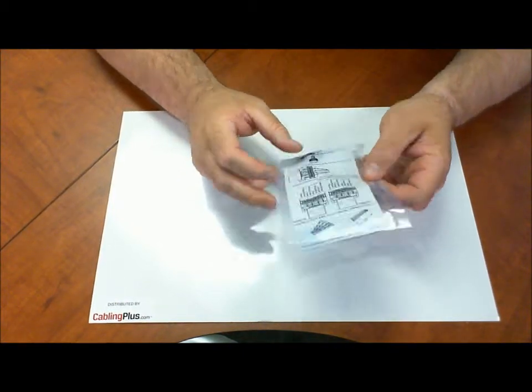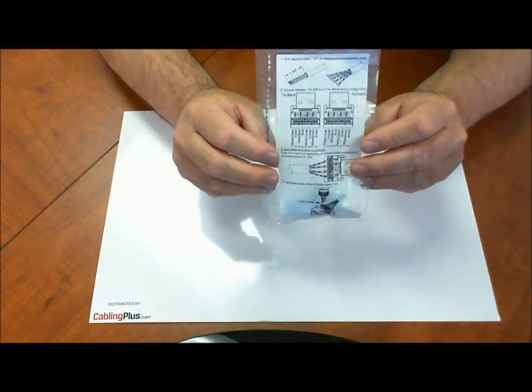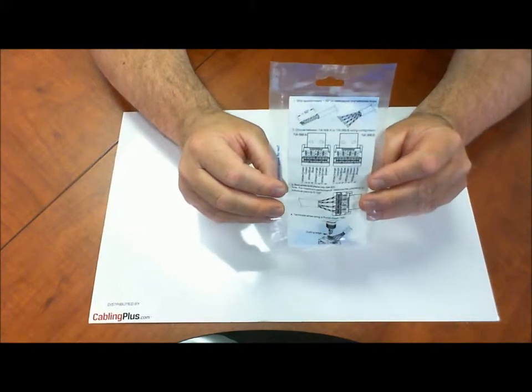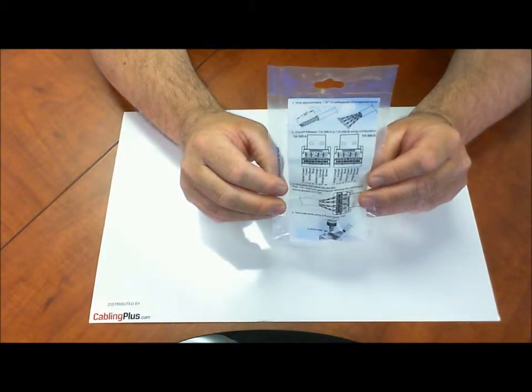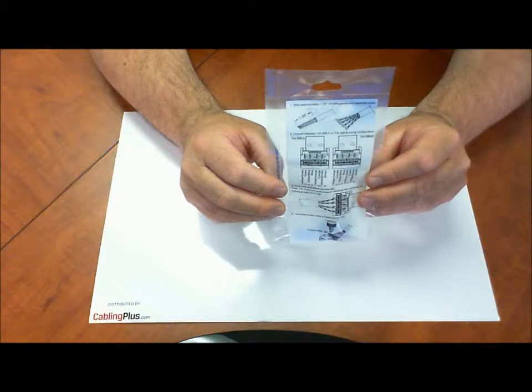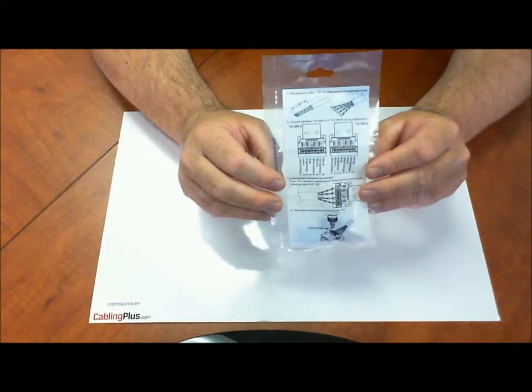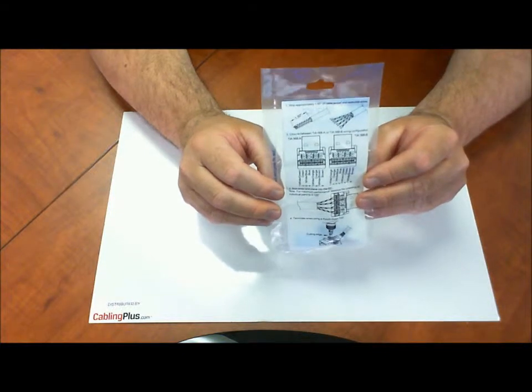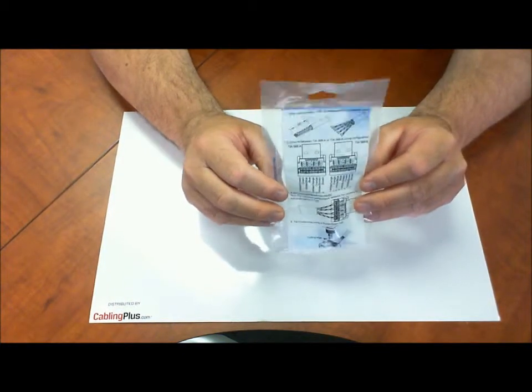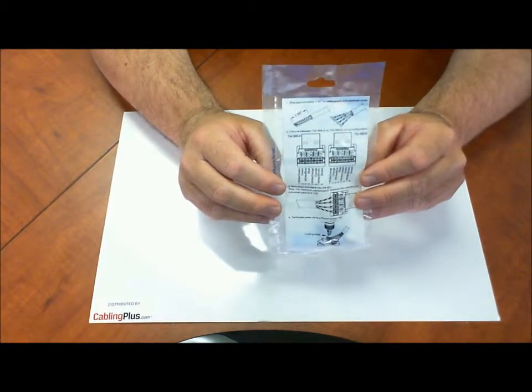So this is the package that comes in. On the back here as you can see they provide information on how to strip the cable. They also provide the color codes for you and they do a really good job laying out the documentation so it's really easy to terminate and they're going to make sure you're successful in your installation.